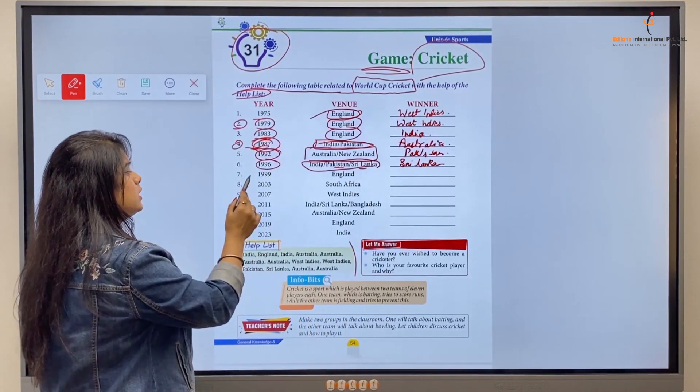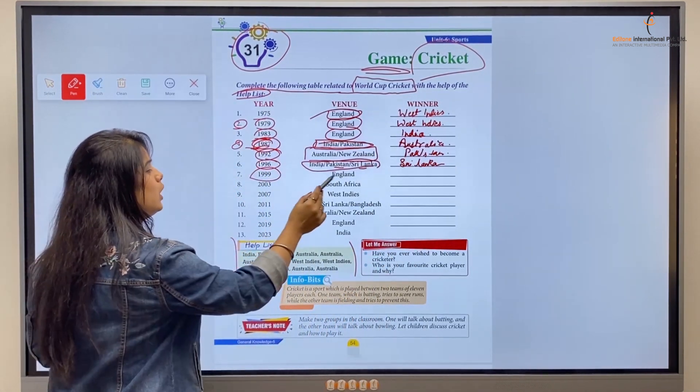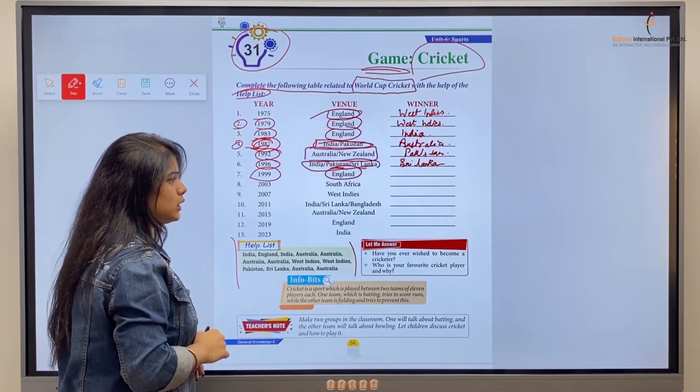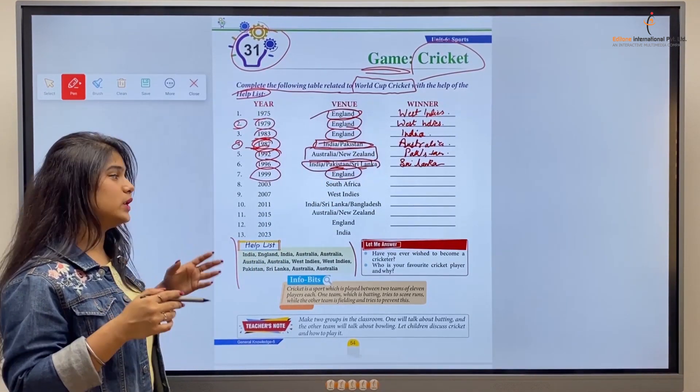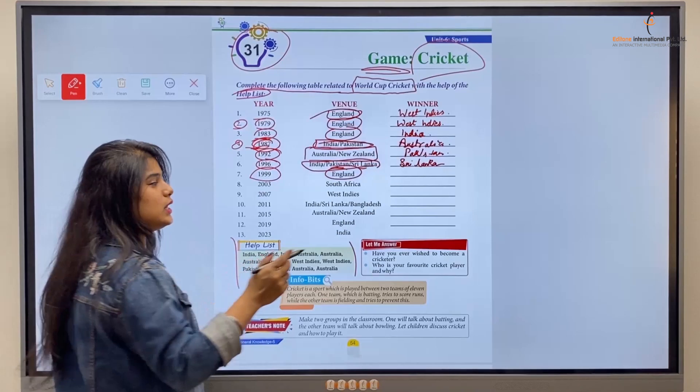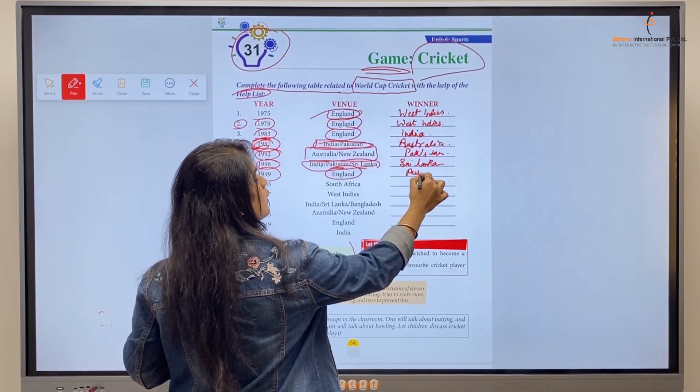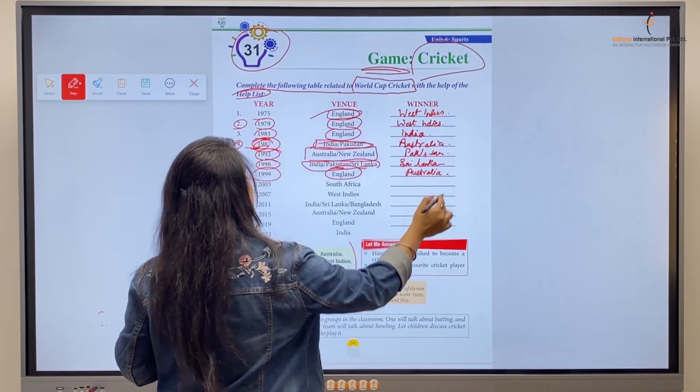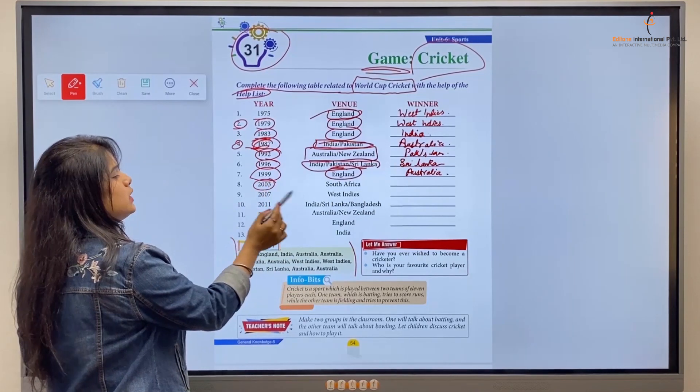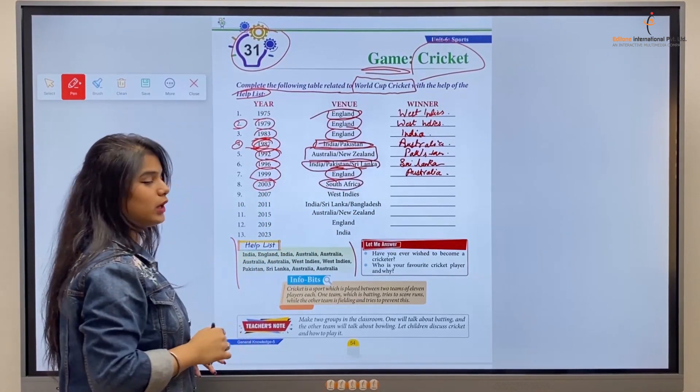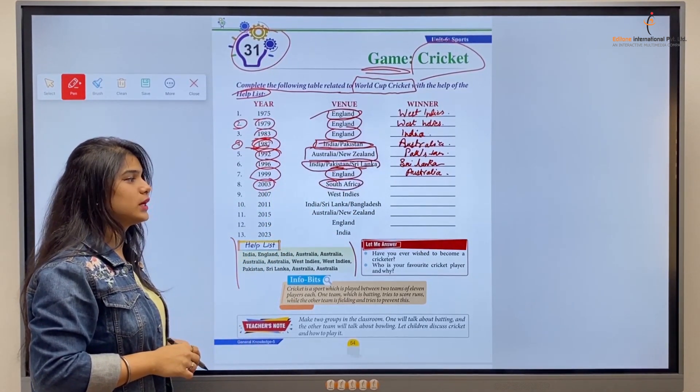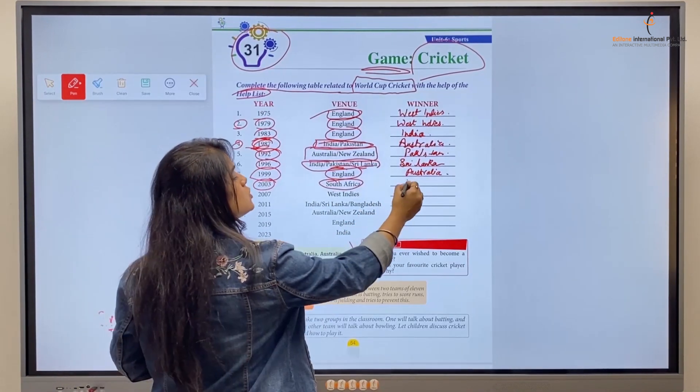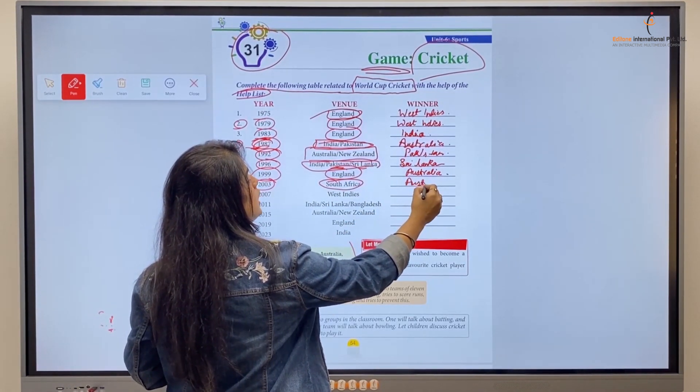Next is the 1999 World Cup which was held in England. The team who was the winner there was Australia. Next, in 2003, it was held in South Africa and the team who was the winner over there was again Australia, so we'll write Australia.